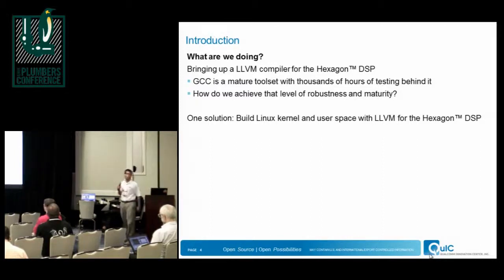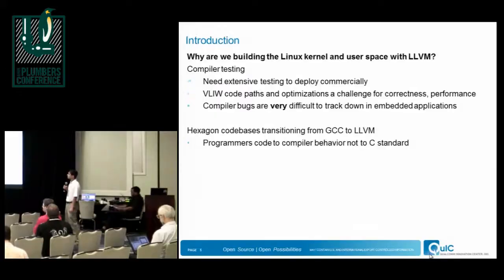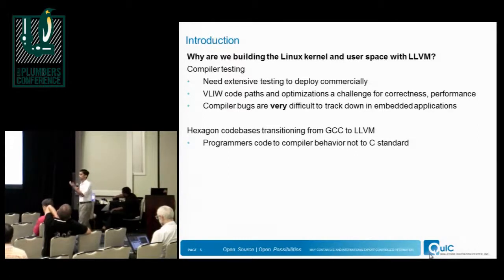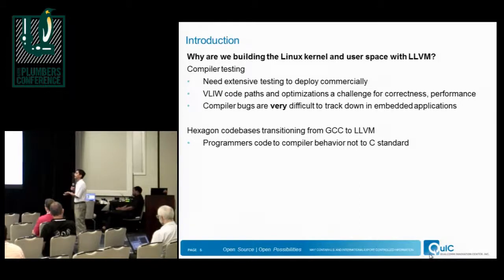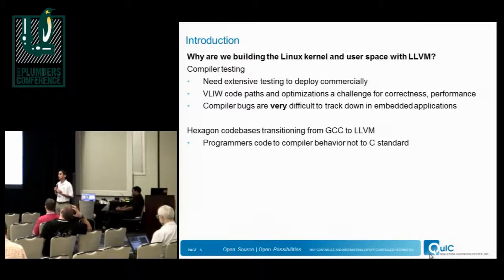I want to keep this very interactive, so feel free to ask questions. From a pure selfish compiler perspective, since Hexagon is a VLIW architecture, a lot of the code paths in the compiler are not very well tested upstream. The backend we provide has very unique characteristics which we really want to test thoroughly as we roll out LLVM to our customers.